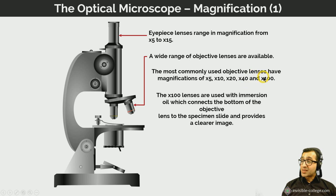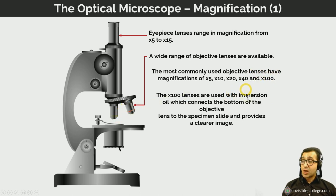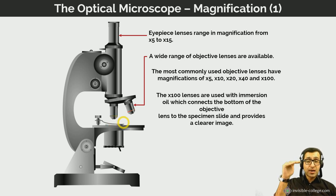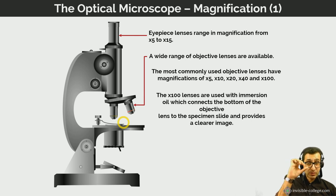The times 100 magnification lenses are typically called oil immersion lenses, because to use them properly you place a small dot of oil on the surface of the cover slip and then lower the objective lens surface toward it.